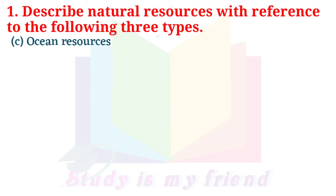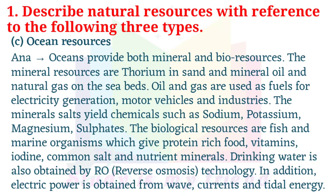C. Ocean Resources: Oceans provide both mineral and bio-resources. The mineral resources include thorium in sand and mineral oil and natural gas on the seabeds. Oil and gas are used as fuels for electricity generation, motor vehicles and industries. The minerals yield chemicals such as sodium, potassium, magnesium and sulfates. The biological resources are fish and marine organisms which give protein-rich food, vitamins, iodine, common salt and nutrient minerals. Drinking water is also obtained by RO technology. In addition, electric power is obtained from wave, current and tidal energy.